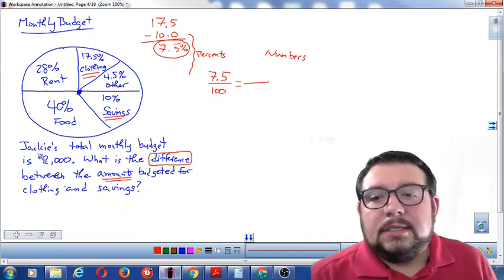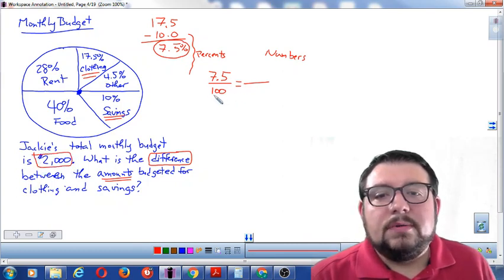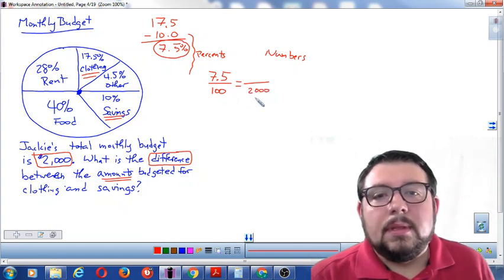I see in the word problem that her total budget is two thousand dollars. So if a hundred percent represents the total and that's on the bottom, then two thousand also has to be on the bottom, and our missing number is going to go right there.